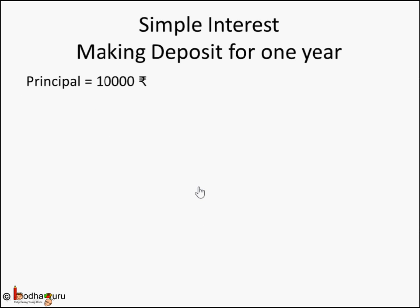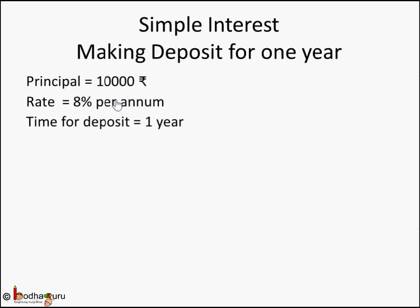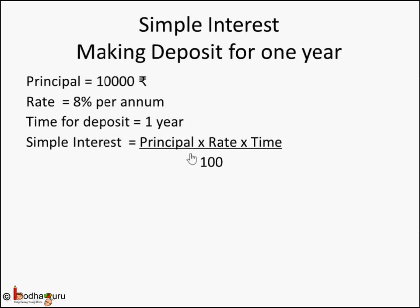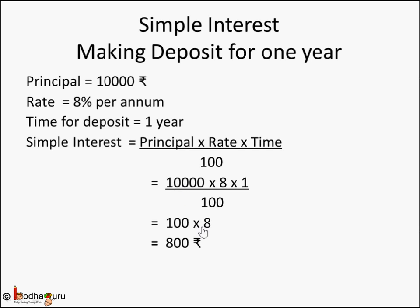Now let's take the deposit example. Principal was 10,000 rupees — the amount Sukram deposited. The bank offered 8% per annum for this fixed deposit — meaning if you deposit 100 rupees, 8 rupees extra will be paid at the end of the year. Time for deposit is 1 year. The simple interest formula is the same: principal × rate × time / 100. Replacing: 10,000 × 8 × 1 / 100 — the two zeros cancel, giving 100 × 8 = 800 rupees as simple interest.